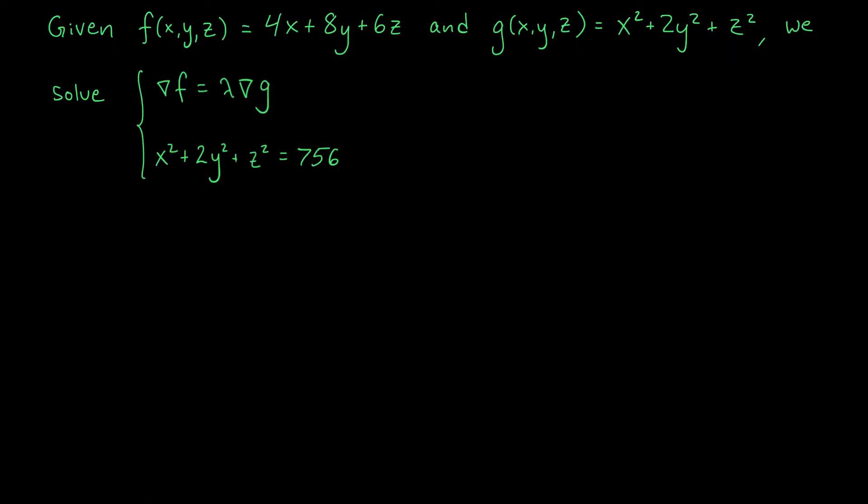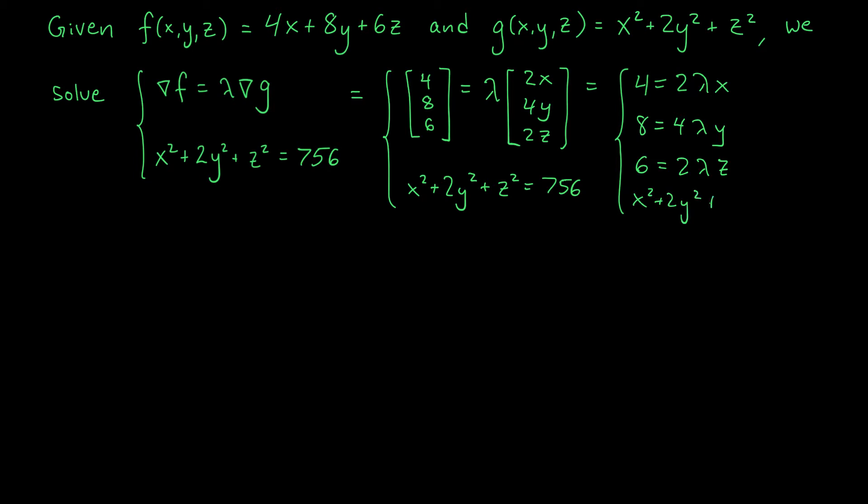Okay, now that we've verified that the gradient of g is not zero along this boundary curve, we're ready to solve our Lagrange equation. Gradient of f equals lambda gradient of g. So we have to compute these gradients. The gradient of f is given by 4, 8, 6. And on the last slide, we already computed the gradient of g. On the right side of this equation, we get lambda times 2x, 4y, 2z. And finally, we have our constraint curve, x squared plus 2y squared plus z squared equals 756. Just like before, we're going to unpack this vector equation to get a system of four equations. We have 4 equals 2 lambda x, 8 equals 4 lambda y, 6 equals 2 lambda z, and x squared plus 2y squared plus z squared equals 756. We'll label these equations as 1, 2, 3, and 4.